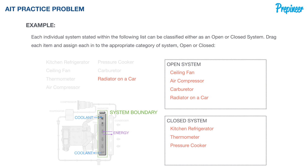To recap: a kitchen refrigerator is a closed system, a ceiling fan is an open system, a thermometer is a closed system, an air compressor is an open system, a pressure cooker is a closed system, a carburetor is an open system, and a radiator on a car is an open system. The number one differentiator across all of these systems is mass flow across the system boundaries — remember that on exam day and this problem will take you seconds.